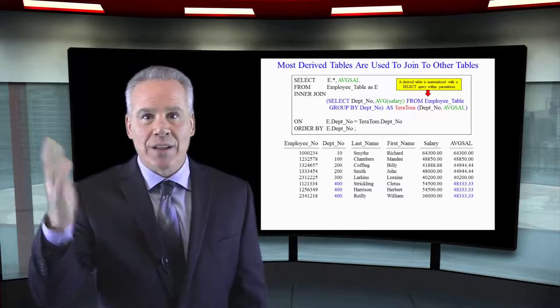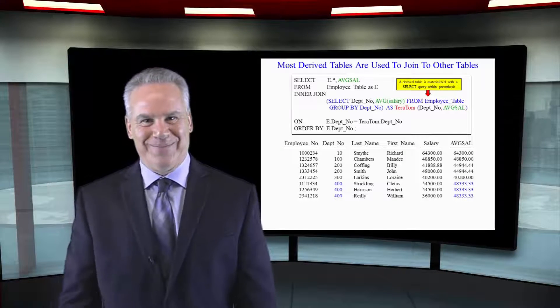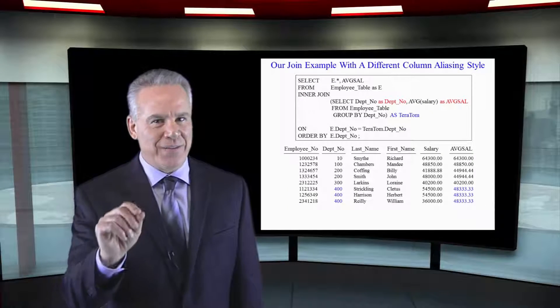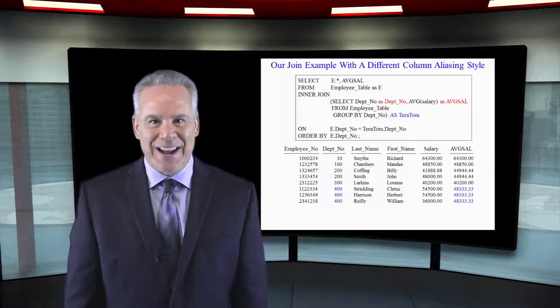And guess what? The derived table is gone when the query is over. This is the exact query we saw before, but it's different in one way. How I've aliased the column names.